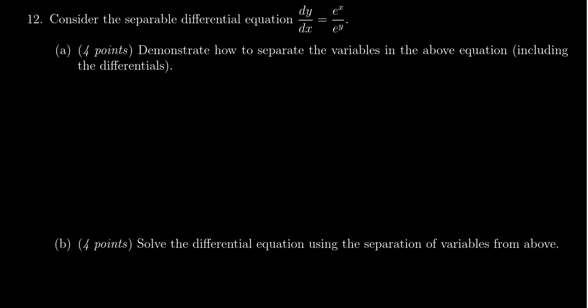Our goal is to make it look like g of y times dy is equal to f of x dx. And it could be that the function is in the denominator. That's perfectly fine here. And so for this one, we really just have to cross multiply. That does it for us.